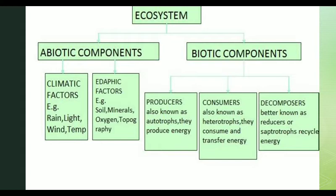Biotic components are classified into three groups: producers, consumers, and decomposers. Producers are green plants and autotrophs.